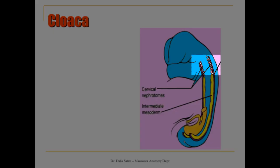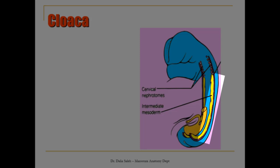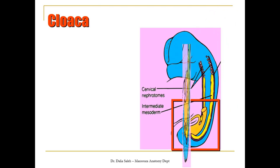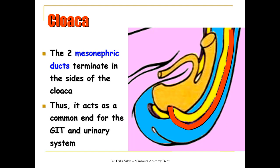At the cervical region there is the pronephros; at the thoracolumbar region there is the mesonephric kidney; and at the sacral region the metanephric kidney will develop. If we enlarge this area, we can see the two mesonephric ducts, which also terminate at the sides of the cloaca. Thus the cloaca acts as a common end for the termination of the gastrointestinal tract and also the urinary system, as the mesonephric duct terminates into the sides of the cloaca.